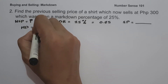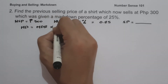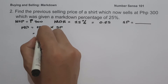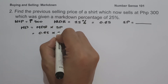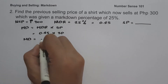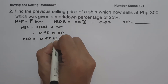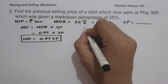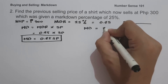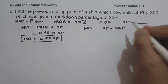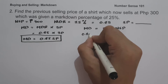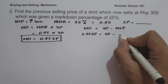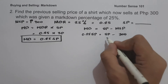To determine the selling price, let us use the formula: markdown equals markdown rate multiplied by selling price. So markdown rate of 0.25 times the selling price gives us 0.25 times selling price. We now use the formula markdown equals selling price minus new selling price, so 0.25 times selling price equals selling price minus 300 pesos.